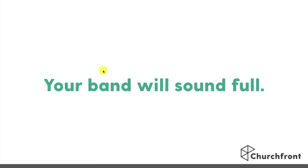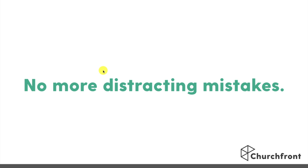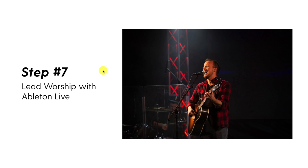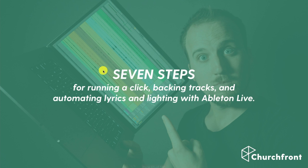I hope after seeing that demonstration and learning this seven-step process, you've learned that Ableton is the key to help your band sound tight and full — tight because of the click and guide cues, full because of the backing tracks. You're not going to have distracting mistakes anymore — your band will make far fewer mistakes because they'll know where they are in the song, and your production team will make far fewer mistakes because of all these automated cues. Once you get up and running and really master Ableton, it only takes an hour or two of focused prep work per week — totally worth it for increasing the level of excellence and engagement in worship. Let's do a quick overview of all seven steps.